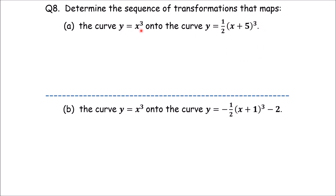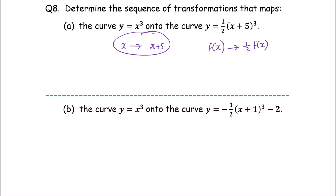Okay, observe the function. There are horizontal and vertical transformations. The first step involves replacing x with x+5, and the second step involves multiplying by one-half to get half of (x+5) cubed.